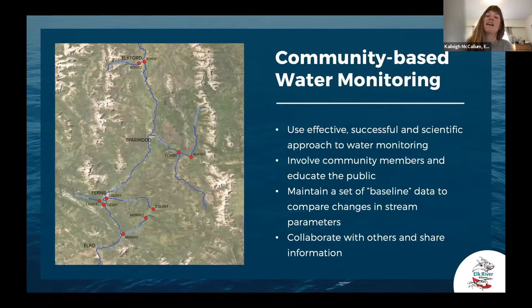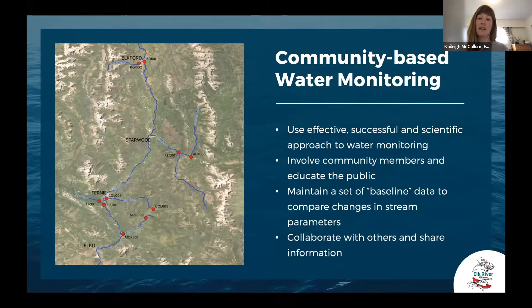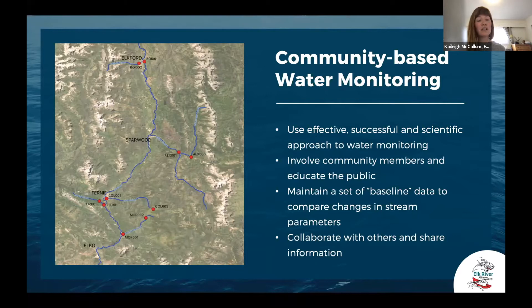Both industry and government already conduct a lot of water monitoring throughout the valley, so we see our role as filling in gaps in their data. Our goal with community-based water monitoring is to look at areas of public concern and include the community in monitoring and decision-making. Since the Elk Valley has a long-standing relationship with mining, we tend to focus on non-mining-affected tributaries. Currently we look at 10 sites along five tributaries: Coal Creek, Lizard Creek, Alexander, Boivin, and Morrissey. We're doing CABIN at all those locations but looking at Stream only at the downstream locations.